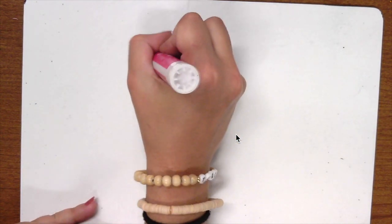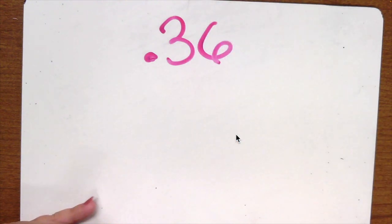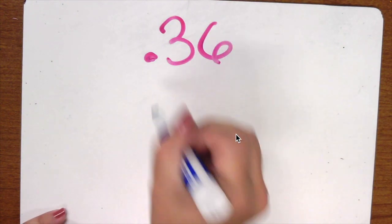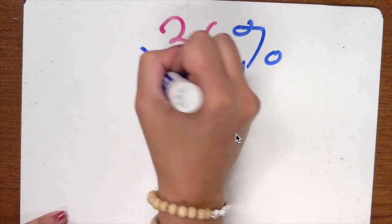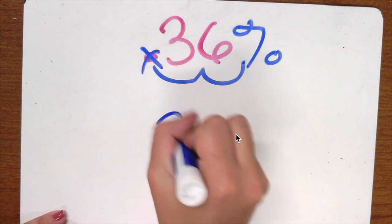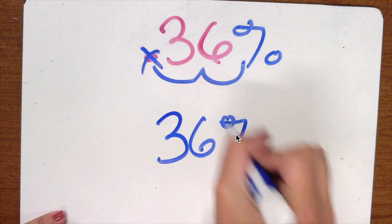Let's say I have 0.36. I want to change that to a percent. Percents are at the back so I'm going to jump towards the back one, two, add my percent, get rid of my decimal. So I'm going to have 36 percent.